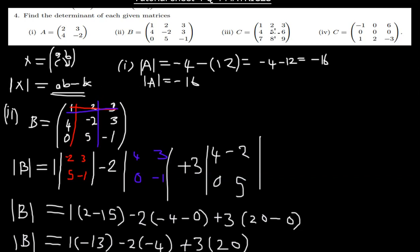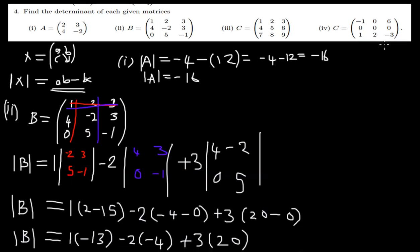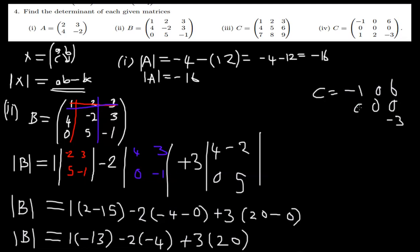Let's move on to question 3, which is matrix C. C is equal to a 3x3 matrix with elements: negative 1, 0, 6 in the first row; 0, negative 3, 0 in the second row; and 0, 2, 1 in the third row. So finding the determinant of this matrix, we find its minors.